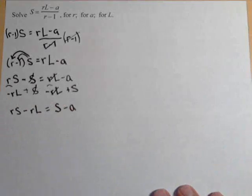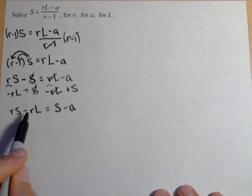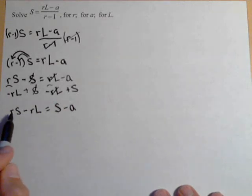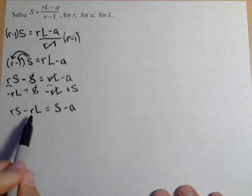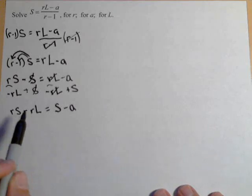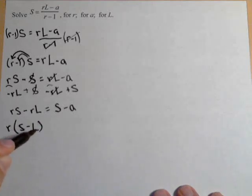Now, the reason we had to do that is because we're still trying to solve for R, and we still have two of them. But, because they're on the same side, and R is in each term, we can factor an R out. So we get R times S minus L.